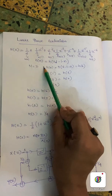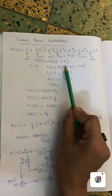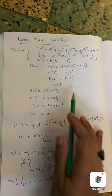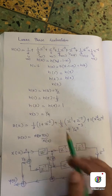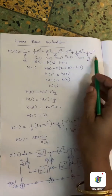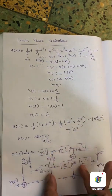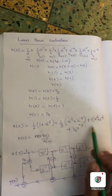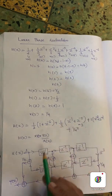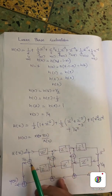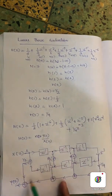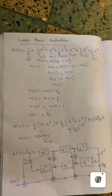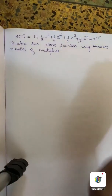This completes the linear phase realization structure with coefficient 1/4. Hope it is clear. Thank you.